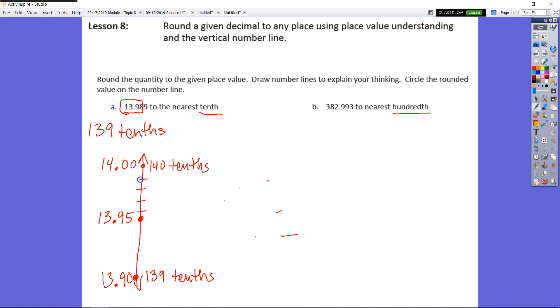So now we need to determine where is this number, the entire number, 13 and 989 thousandths is going to fall on this number line. So this is 13 and 950, that would be 60, 70, 80, 90. So it would be just under the 90 mark there. And that would be our number. So we know that we would circle this number here. We will round this up to 14 or round it to 140 tenths.